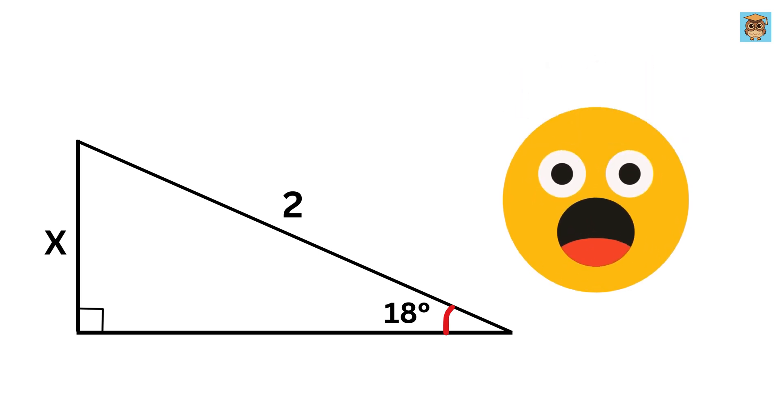This question is going to blow your mind. We are given a right angle triangle whose hypotenuse or this side length is two units, and this angle is 18 degrees. Also, this side length is x units.